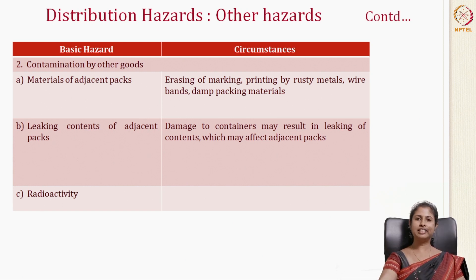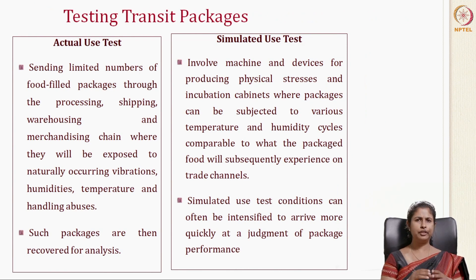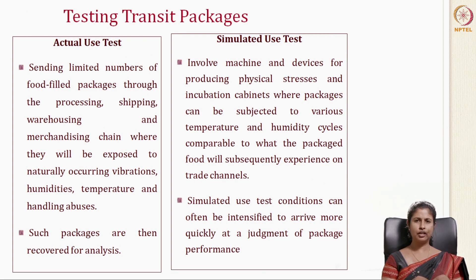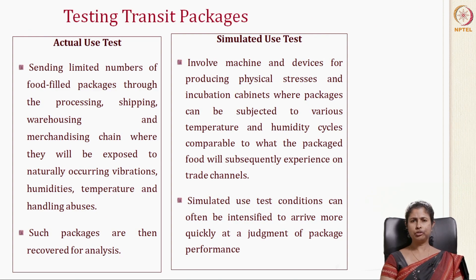Now that we have detailed the distribution hazards a transit package encounters, let's move on to testing. There are two types of tests: the actual use test and the simulated use test. In an actual use test, a limited number of food-filled packages are sent through the real processing, shipping, warehousing, and merchandising chain, exposed to naturally occurring vibrations, humidities, temperature changes, and handling abuses. However, this is a very tedious procedure involving cost and materials, so the packaging industry typically uses simulated tests done in labs.